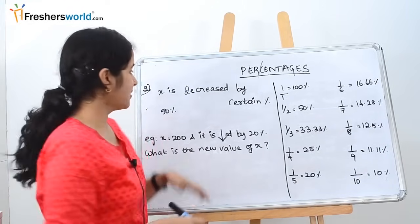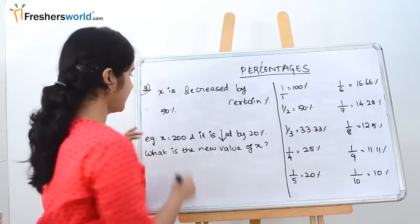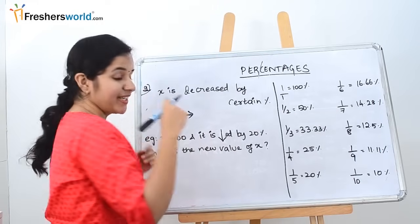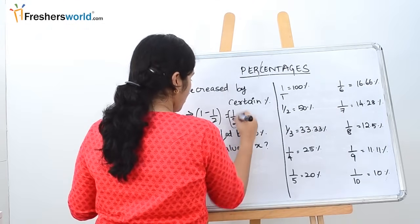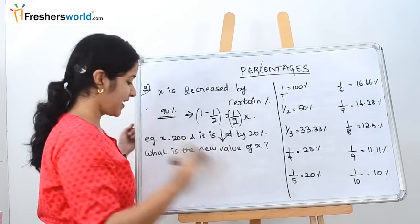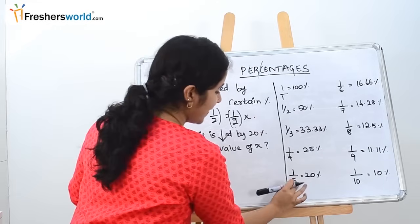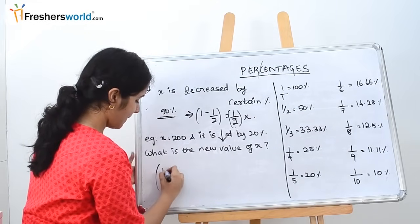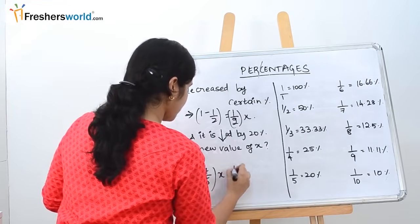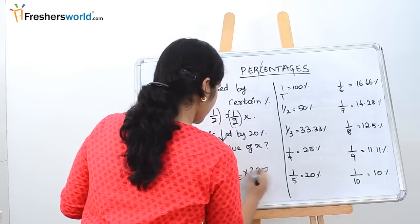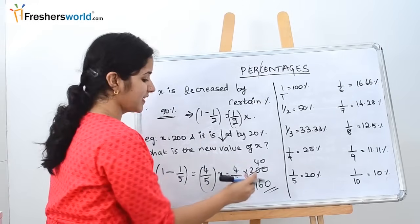The third type is: x is decreased by a certain percentage. If x is decreased by 50%, since 50% = 1/2, we subtract: 1 − 1/2 = 1/2 of x. Using the same example with x = 200 decreased by 20%: 20% = 1/5, so we get 1 − 1/5 = 4/5 of x. That gives 4/5 × 200 = 160. If x is decreased by 20%, the new value is 160.